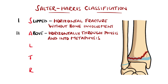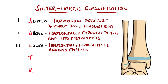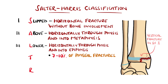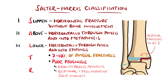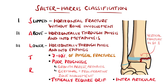Type 3, or lower, passes horizontally through the growth plate and then involves the epiphysis, typically featuring a vertical fracture through the epiphysis and into the articular cartilage. Around 7-10% of physeal fractures are type 3. Because the reserve and proliferative zones of the growth plate are involved, there is a poorer prognosis, which includes growth disturbance or arrest, and arthritis as a result of incongruity of the joint. Most of these cases will need open reduction and internal fixation.